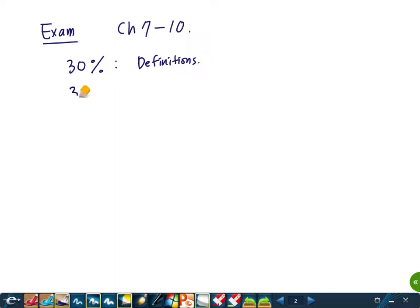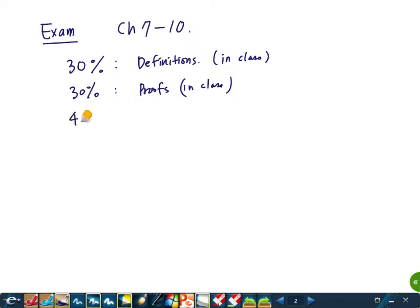Another 30% will be based on proofs that I did in class. Of course, everything is in class — if you understood the definitions and proofs from class, it shouldn't be a big problem. The last 40% will be based on homework problems, so if you understood the homework problems, it should be easy. The exam will be in class on Tuesday, June 18th.